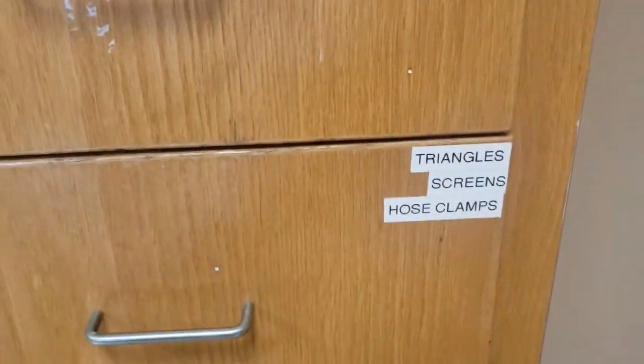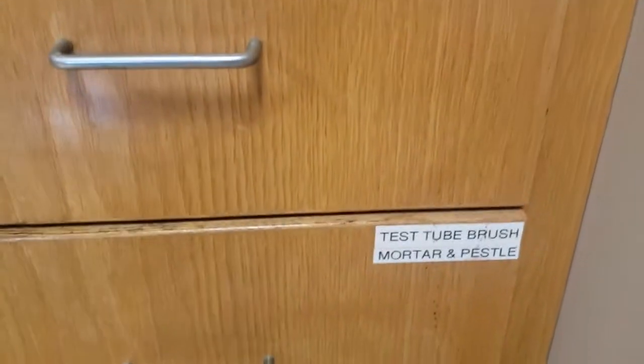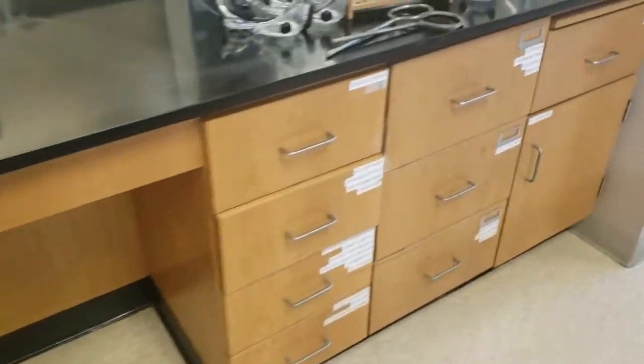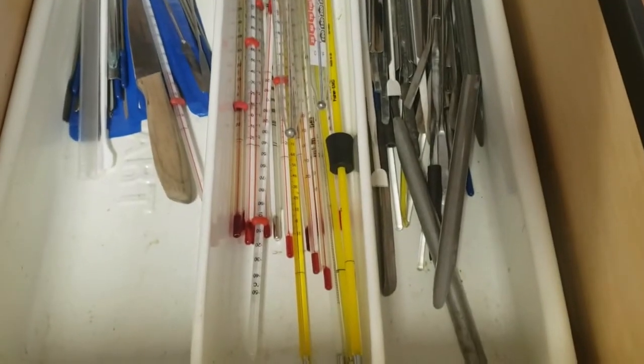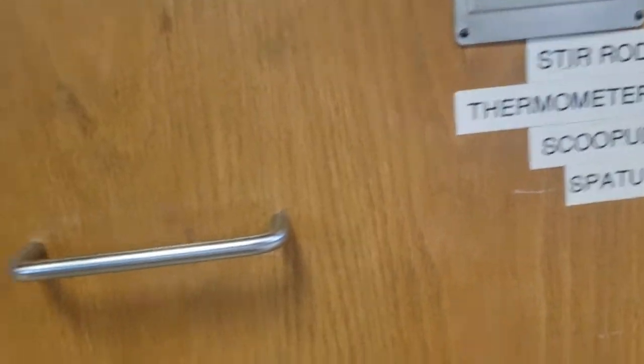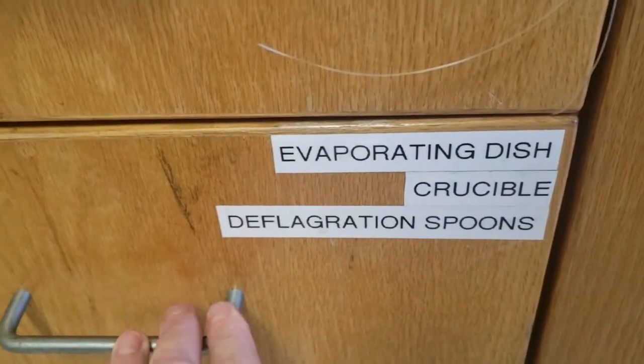There's the tongs on the wall near the door. There are the triangles if you need a brush or a mortar and pestle. On this middle section, it's got the scoopulas, spatulas, thermometers. You go a little farther down to the left, you'll find evaporating dishes.